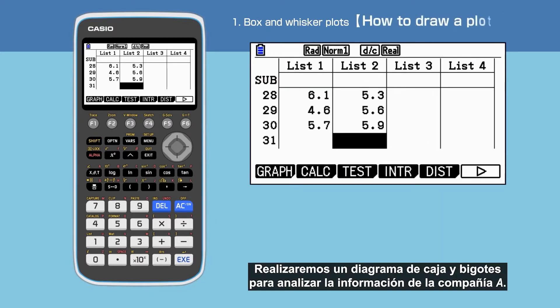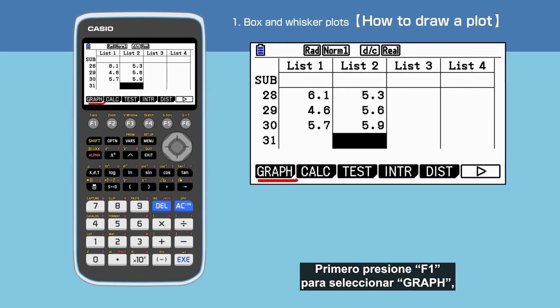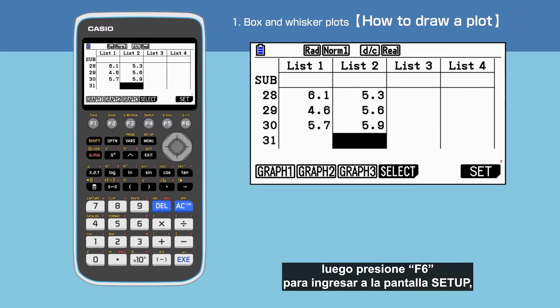We will draw a box and whisker plot to analyze the data for company A first. Press F1 to select Graph, then F6 to open the setup screen.